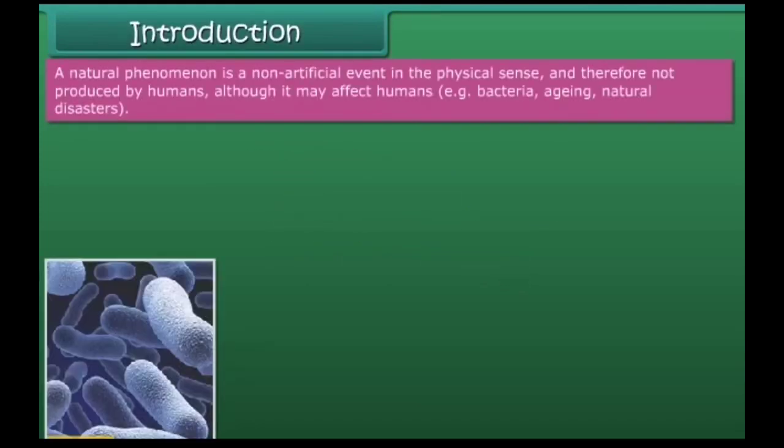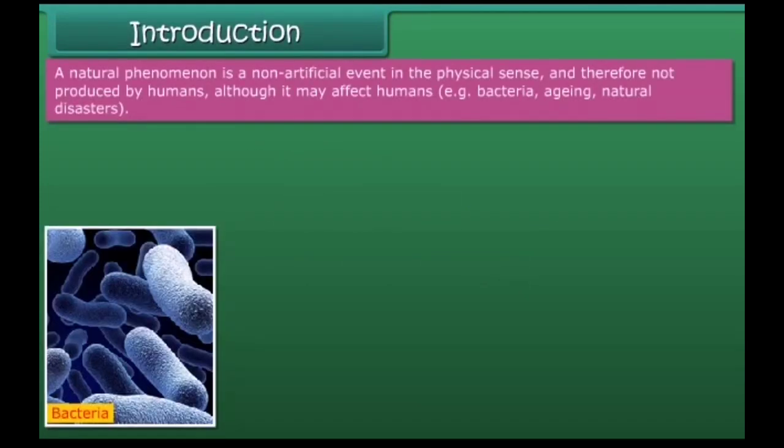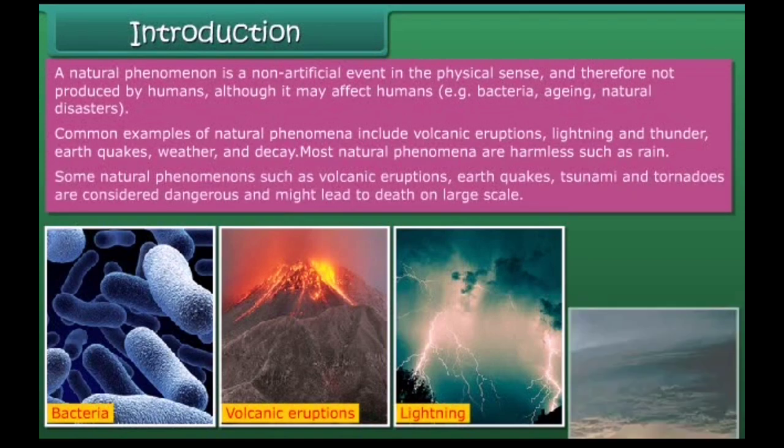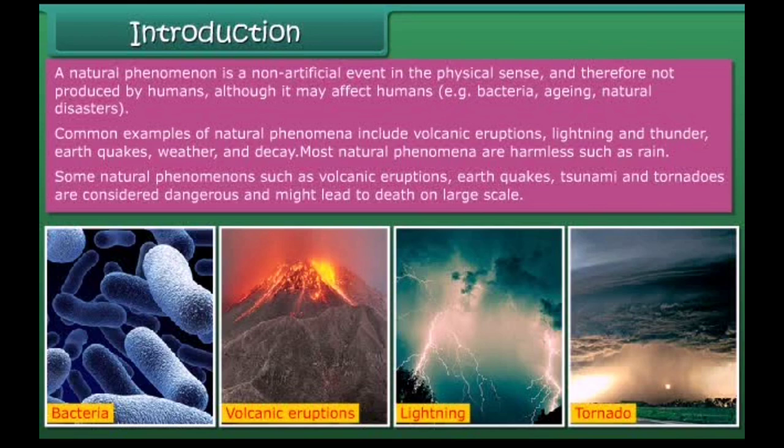Introduction. A natural phenomenon is a non-artificial event in the physical sense, and therefore not produced by humans, although it may affect humans. Examples include bacteria, aging, and natural disasters. Common examples of natural phenomena include volcanic eruptions, lightning, and thunder, earthquakes, weather, and decay. Most natural phenomena are harmless, such as rain.